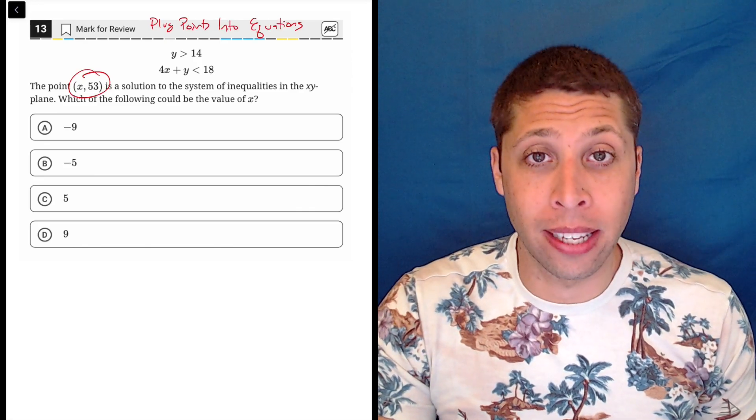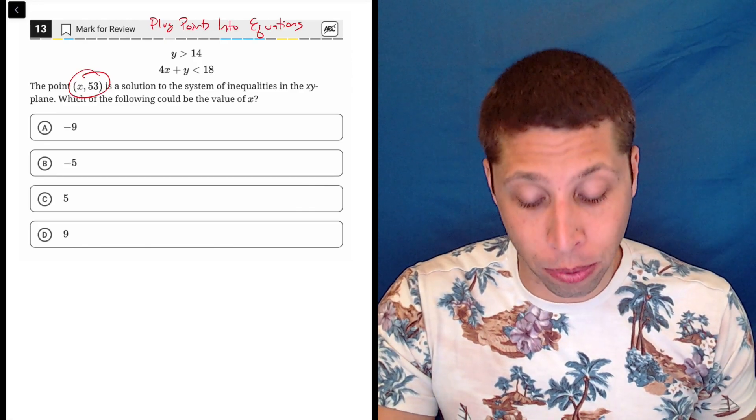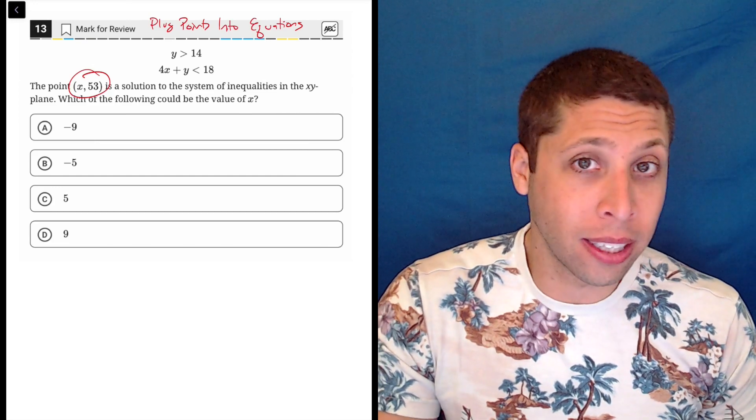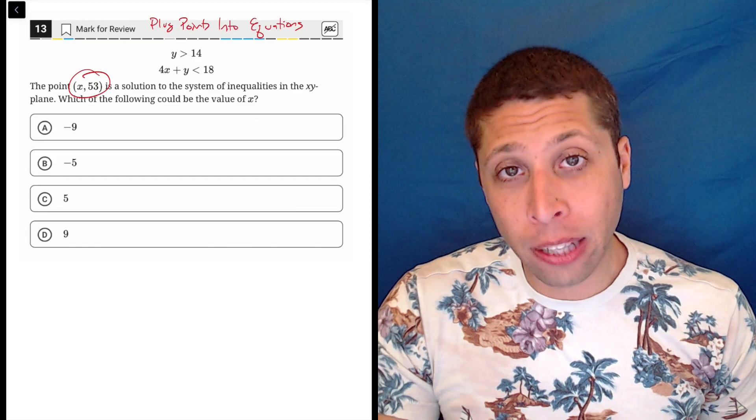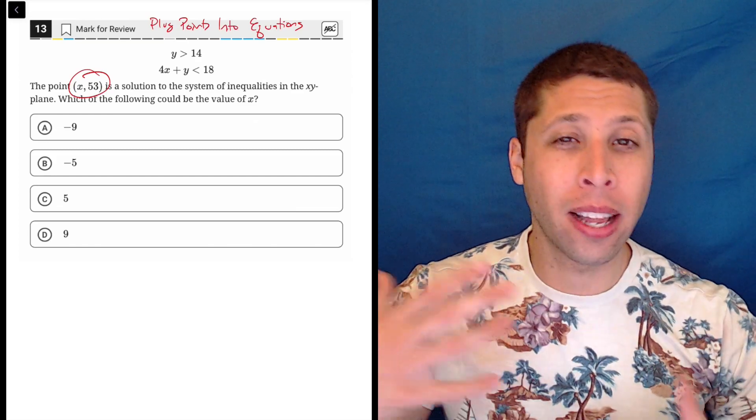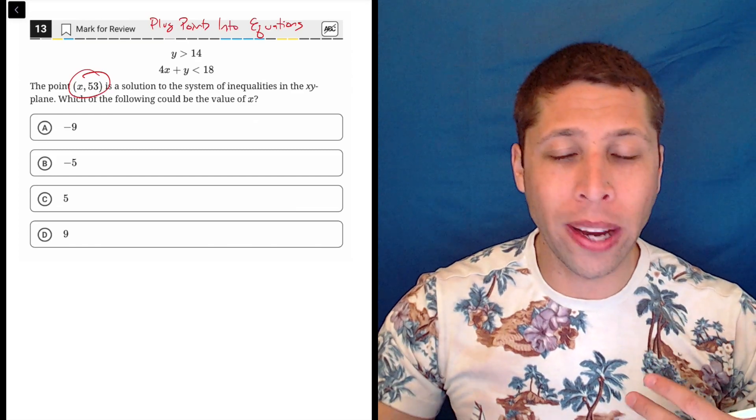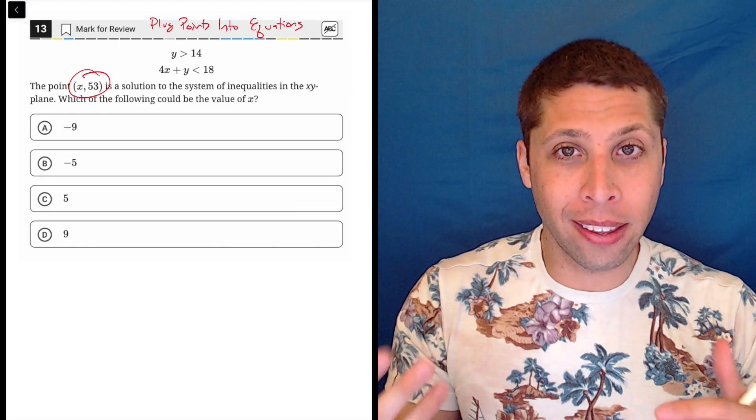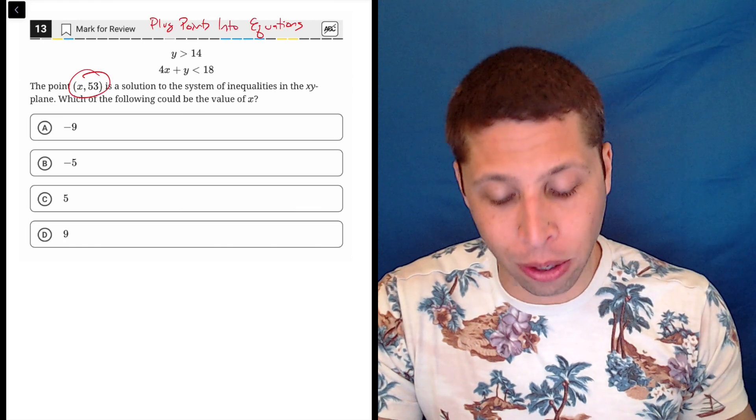They're telling us half of the point is y as 53, right? So the x is unknown, they're going to ask us about the x, but the y, they're telling us just straight up is 53. And that's what makes this more about arithmetic to me than a system of inequalities, a system of equations, and normally with systems, I'm going to graph them. But here, they're kind of just telling me a number to plug in, so it's much easier.